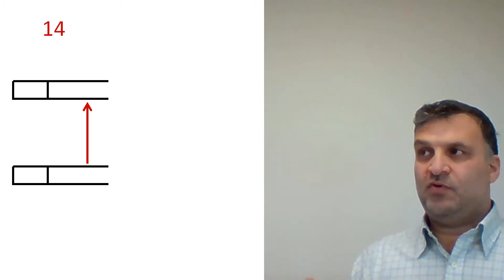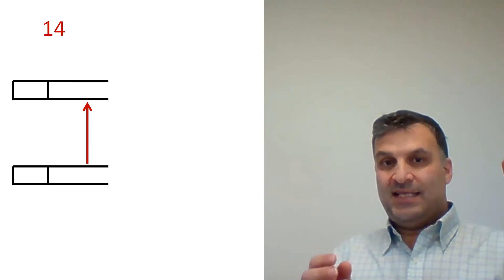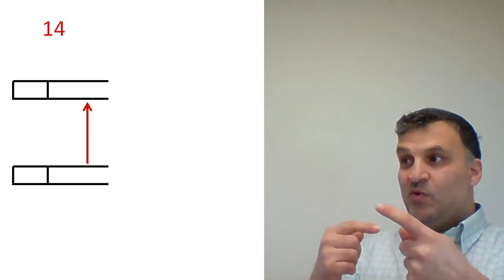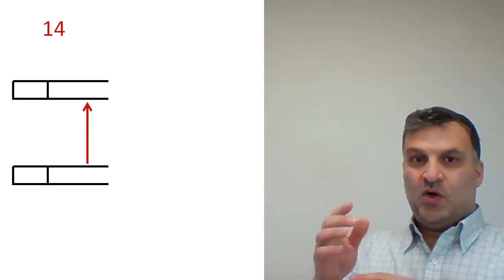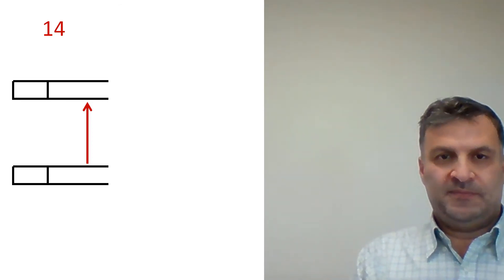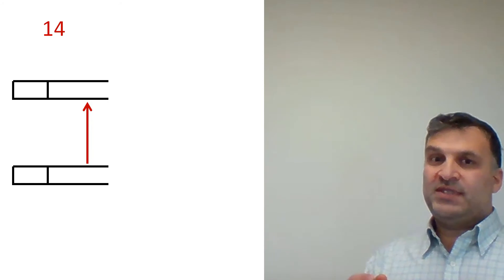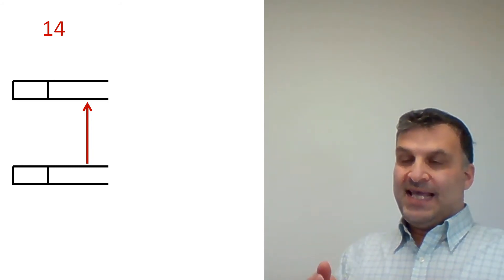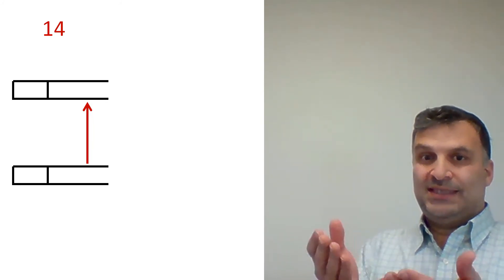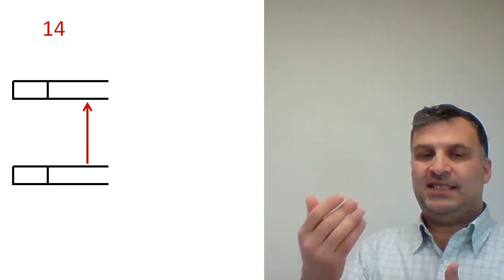As we said before, we cannot communicate between an external entity and a data store, we cannot communicate between a data store and an external entity, and we cannot communicate between two data stores. It is always the processes that should control this movement — processes take data from data stores, inject data into data stores, receive data from external entities, and send data to external entities.